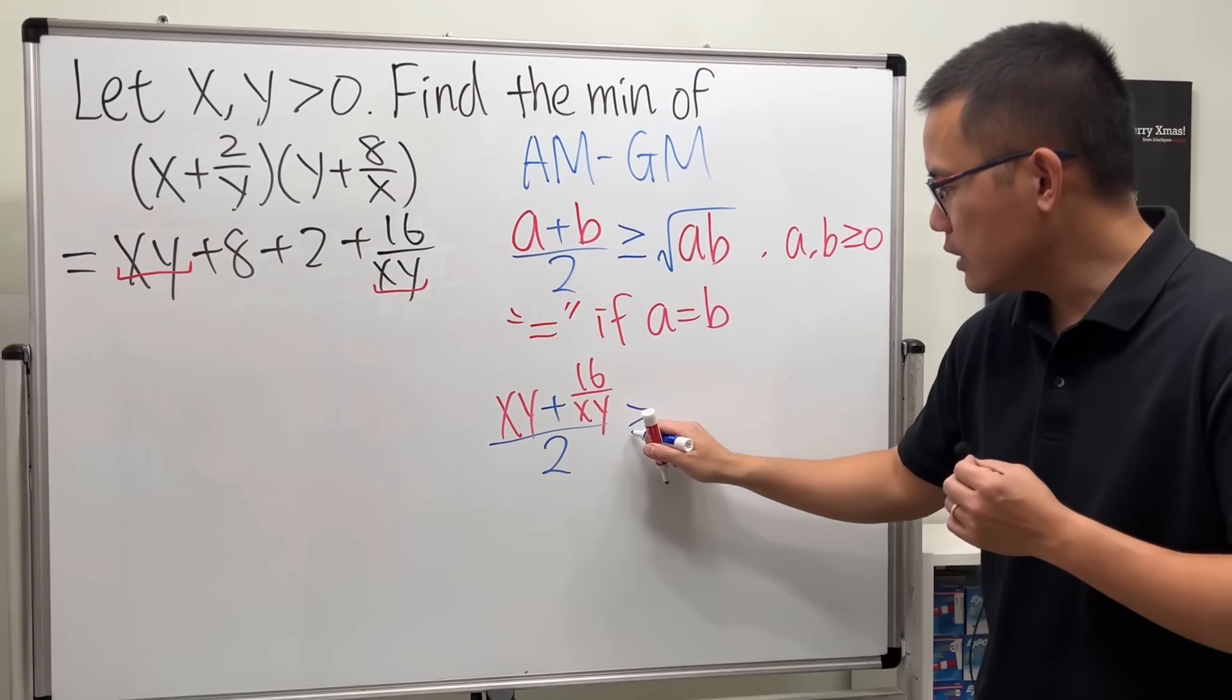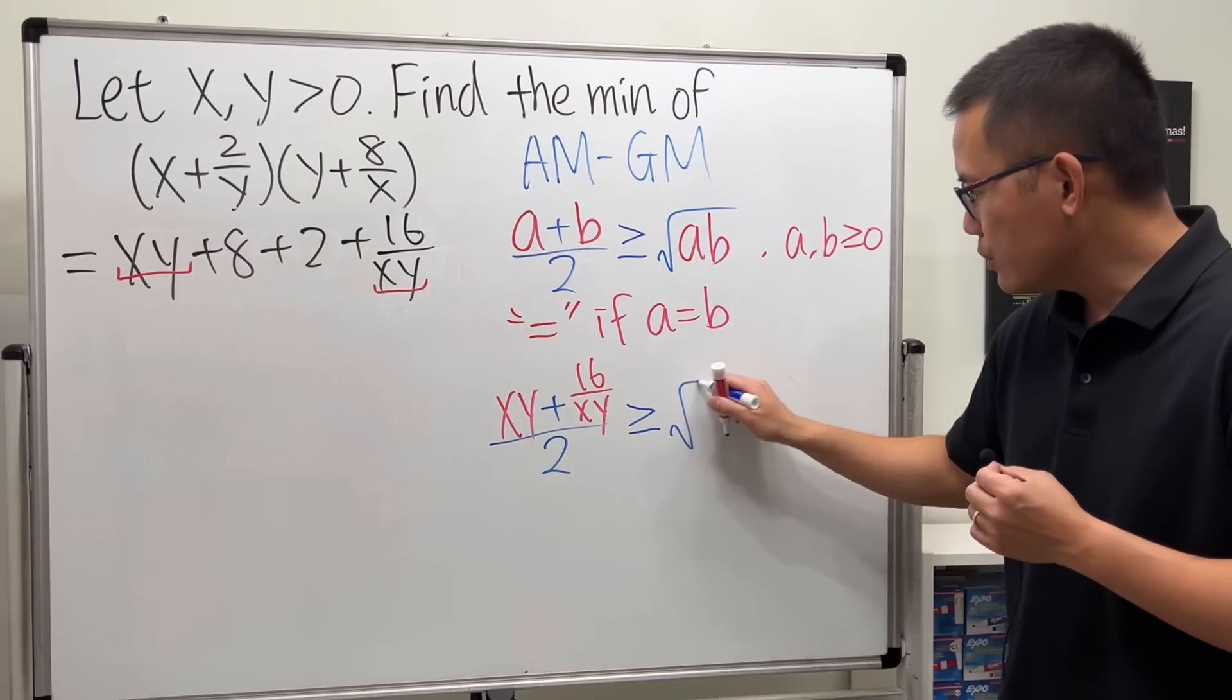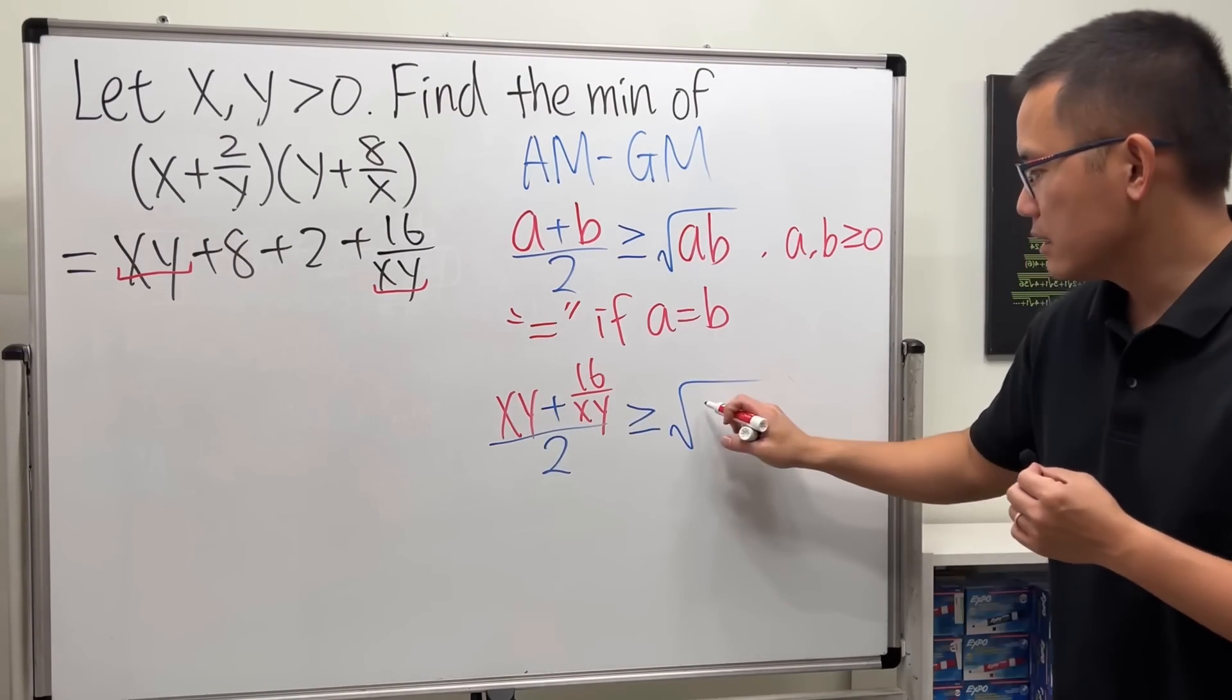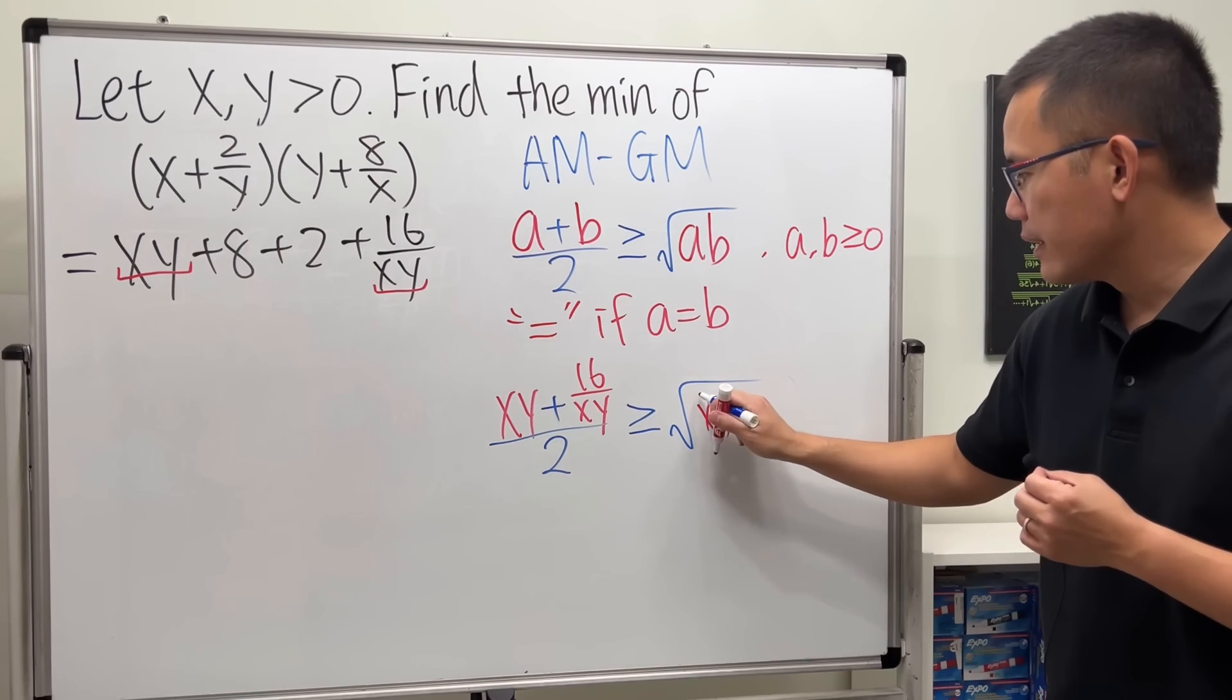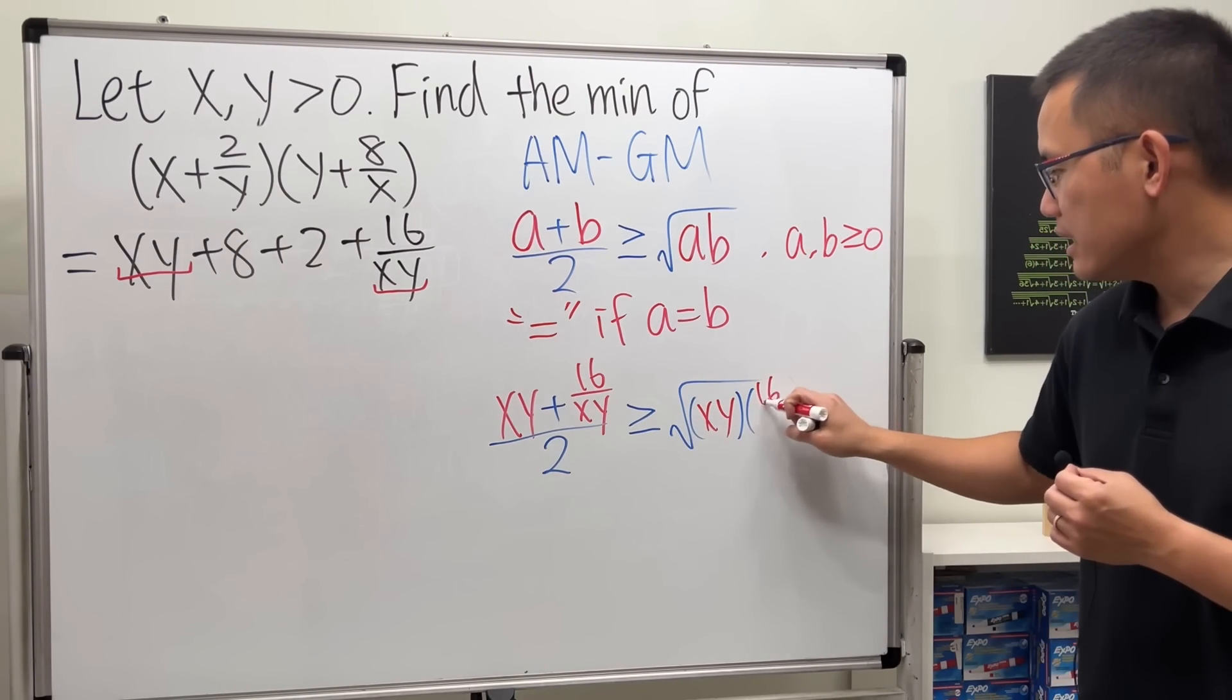And we know it has to be greater than or equal to the square root of this times that: xy times 16 over xy.